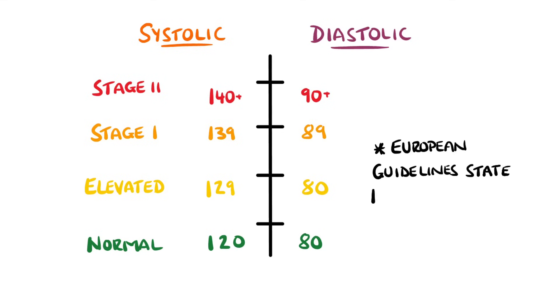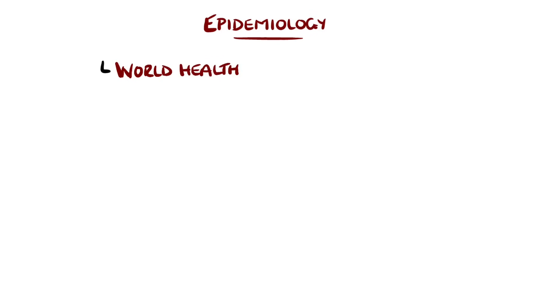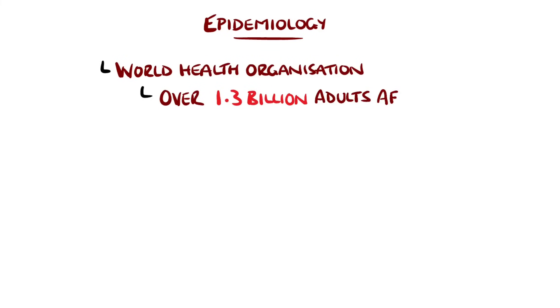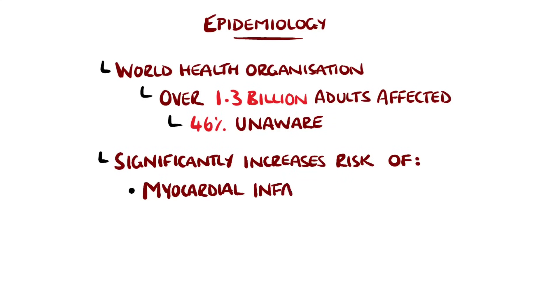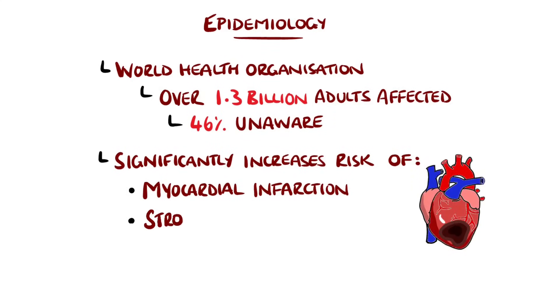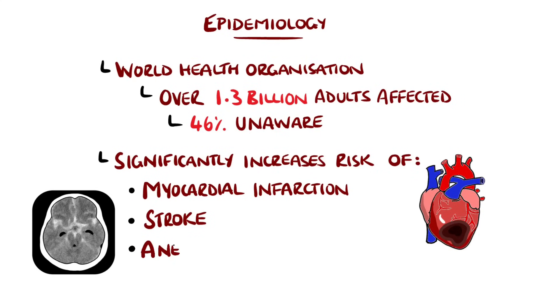In the European guidelines these ranges are shifted upwards slightly. The World Health Organization states that over 1.3 billion adults have hypertension and nearly half of them are unaware that they have it. This is significant as hypertension increases the risk of myocardial infarction, strokes, aneurysms and dissections — which means tearing of blood vessels — and even dementia.